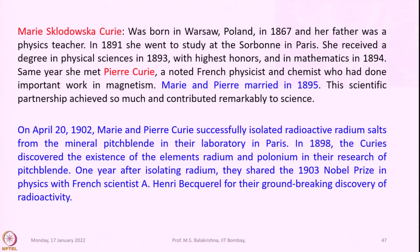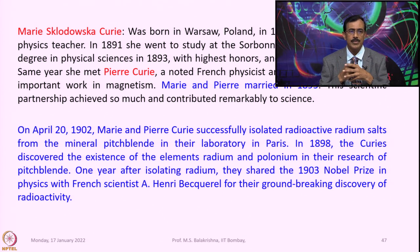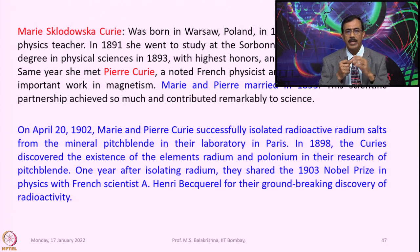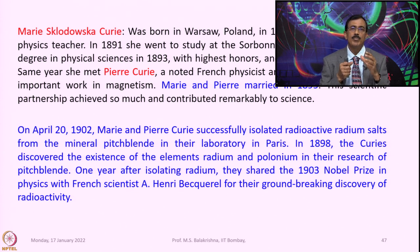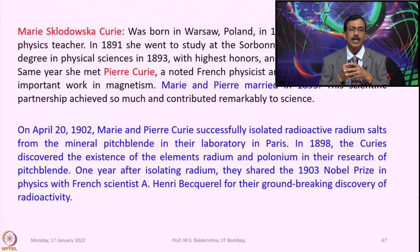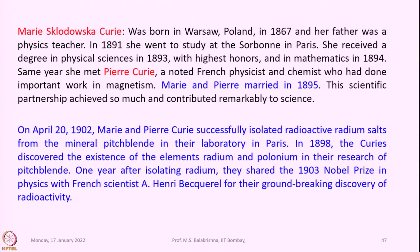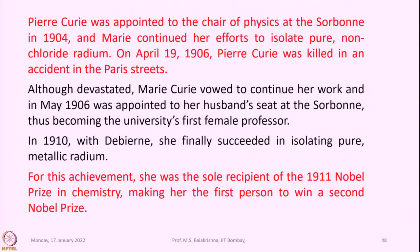On April 20th, 1902, Marie and Pierre Curie successfully isolated radioactive radium salts from the mineral pitchblende in their laboratory in Paris. In 1898, the Curies discovered the existence of the elements radium and polonium in their research of pitchblende. One year after isolating radium, they shared the 1903 Nobel Prize in Physics with French scientist Henri Becquerel for their groundbreaking discovery of radioactivity. She is the first woman recipient of the Nobel Prize.